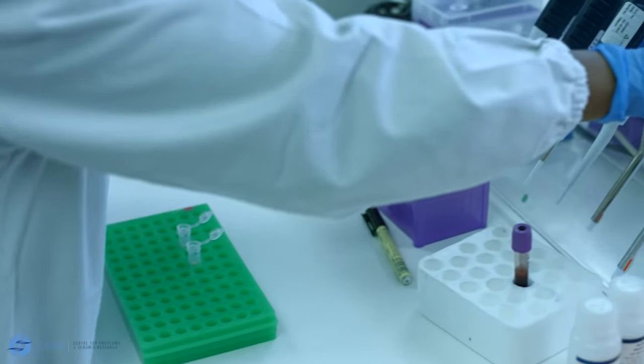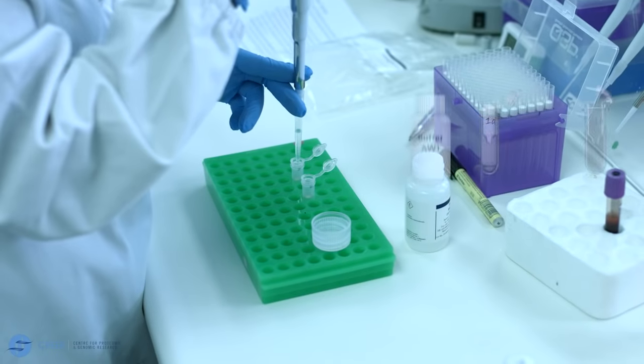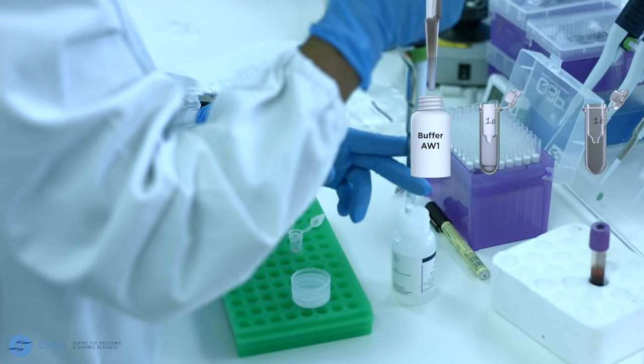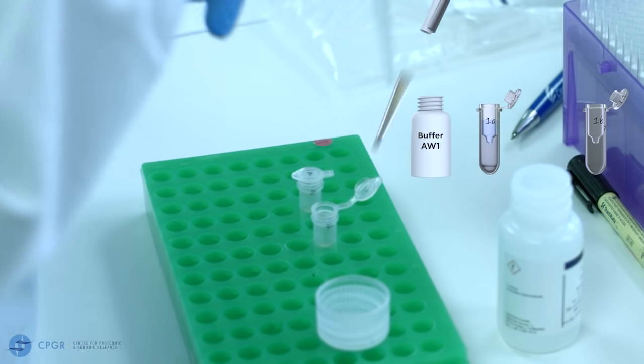Carefully open the spin column and add 500 microliters of AW1 buffer, taking care not to wet the rim. Remember to change your tip between each sample.